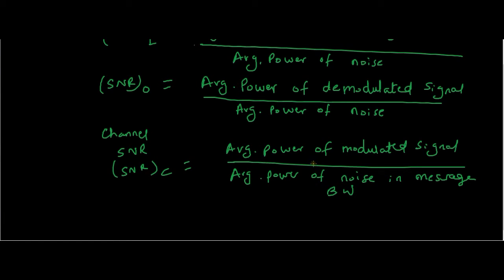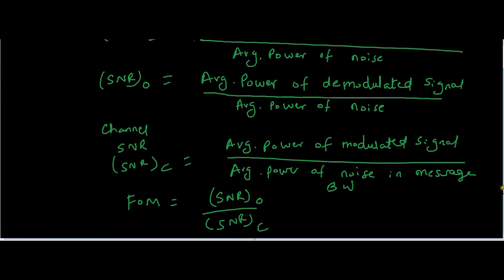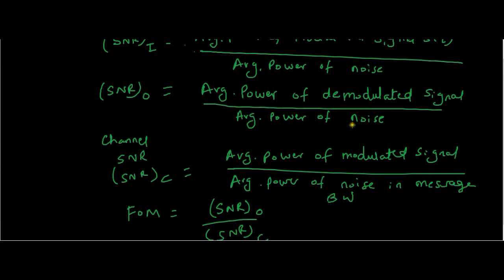These are the three SNRs, and we define something called figure of merit. We have been studying different modulation techniques — there is AM, DSB-SC, and SSB. We need to give a rank to all three techniques, and the criterion used in communication systems is figure of merit. Figure of merit is defined as the ratio of SNR at output to SNR at channel — that is, average power of demodulated signal over average power of noise, divided by average power of modulated signal over average power of noise in message bandwidth.